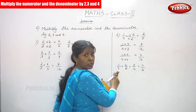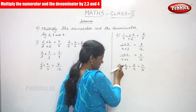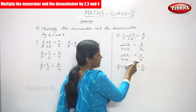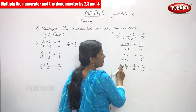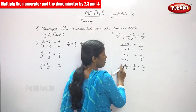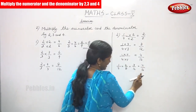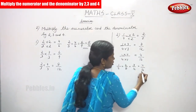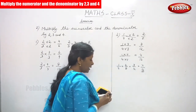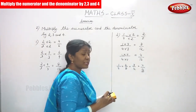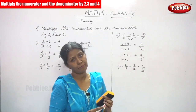So first 1 by 4 is multiplied by 2 and you get 2 by 8. Next, 1 by 4 is multiplied by 3 and you get 3 by 12. Next, 1 by 4 is multiplied by 4 and you get 4 by 16. This is also an equivalent fraction — we are multiplying by different multiples 2, 3, and 4.